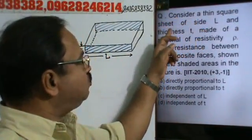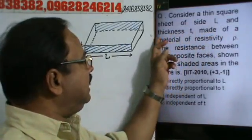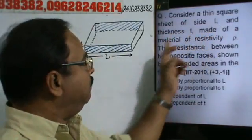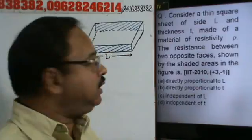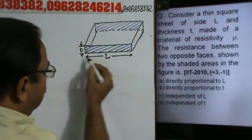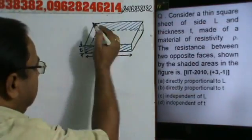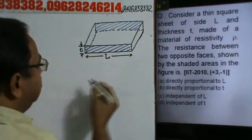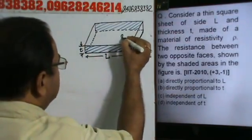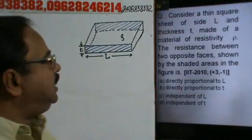The problem is: consider a thin square sheet of side L and thickness T, made of a material of resistivity rho. This is a square sheet of length L and thickness T, where rho is the resistivity of the material.